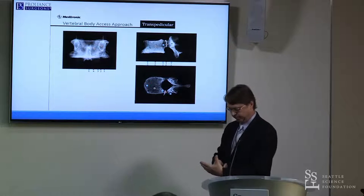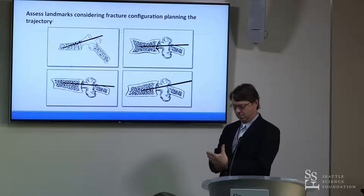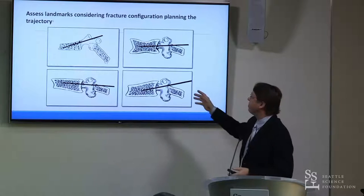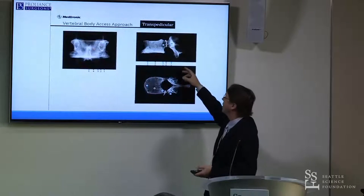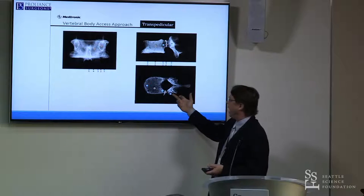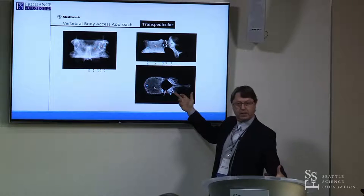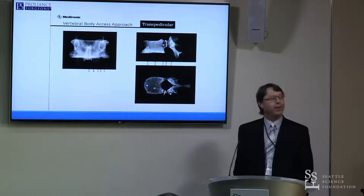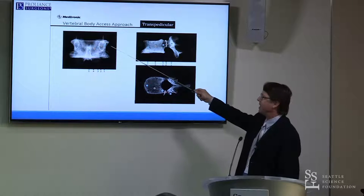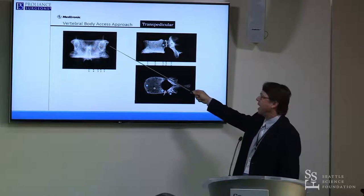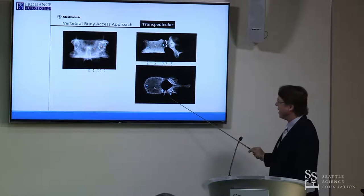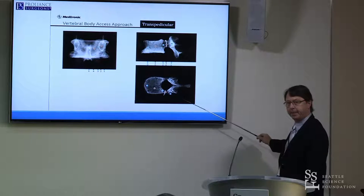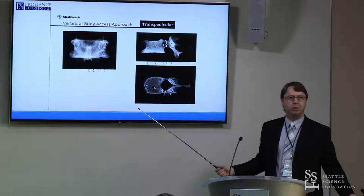When placing a Jamshidi needle, you place it at the merger of the transverse process and the pedicle. As you come from outside in, the transverse process anchors at the base of the pedicle, and there's a saddle there. When you dock at that point, you know from your imaging that the pedicle is approximately 18 to 22 millimeters long.